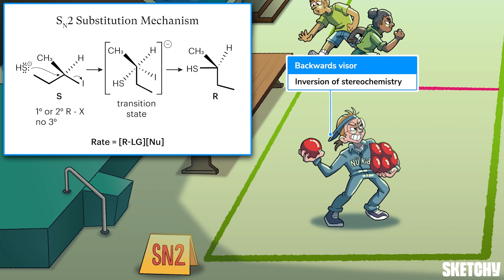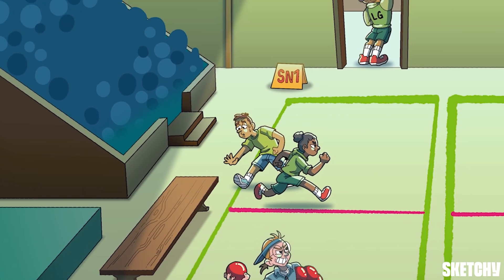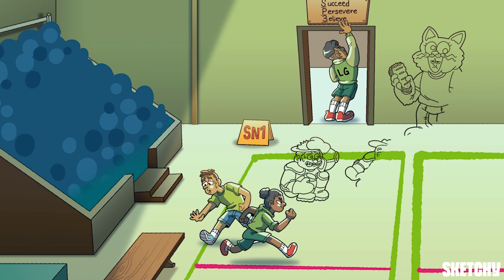Notice he's wearing his visor backwards — that's not just a display of freshman sports-star attitude, it's also a reminder that the SN2 reaction always proceeds with inversion of stereochemistry. The mechanism involves the nucleophile attacking from the opposite side of the carbon as the leaving group, causing the other three bonds around the carbon to pop from one tetrahedral geometry to the other, like an umbrella that turns inside out in a windy rainstorm. So an R stereocenter that undergoes an SN2 reaction will become S, and vice versa.